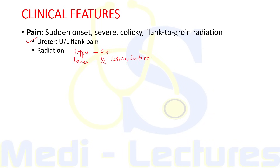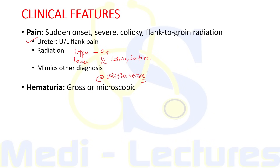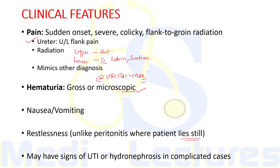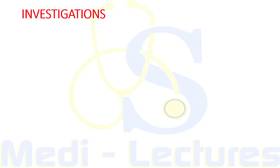Right-sided pain can mimic acute cholecystitis and appendicitis. A stone at the ureterovesical junction — between the ureter and bladder — can produce symptoms like urinary frequency and urgency. Hematuria can be gross or microscopic. Nausea and vomiting are significant in the majority of patients. The patient is typically restless, unlike a peritonitis patient who lies still. A few patients may have signs of UTI or hydronephrosis in complicated cases.